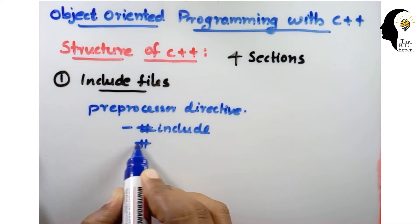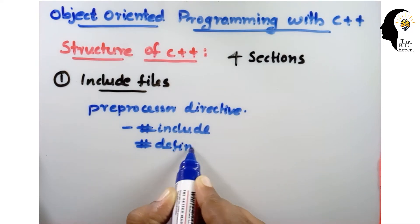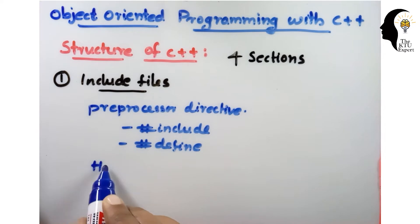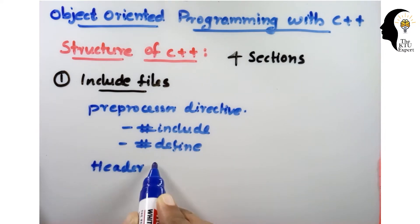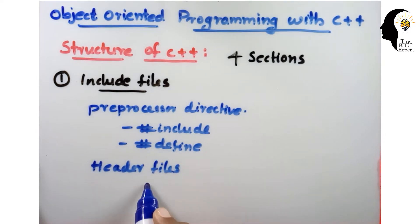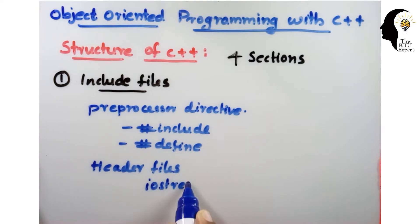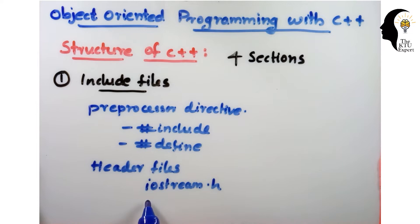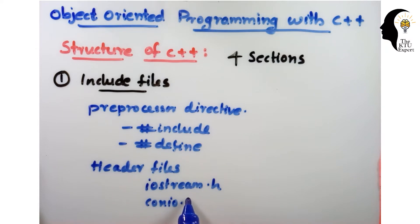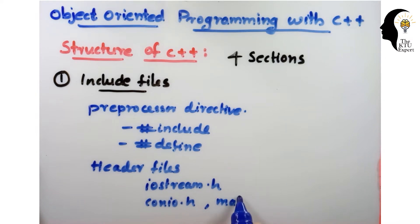The preprocessor section contains directives like hash include and hash define, along with header files. The commonly used header file is iostream.h — the .h extension is used here. iostream.h contains the commonly used functions in C++, like cout, cin. math.h is used if any mathematical functions are needed.